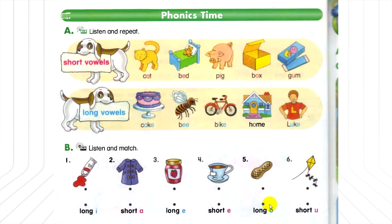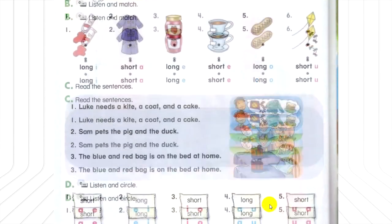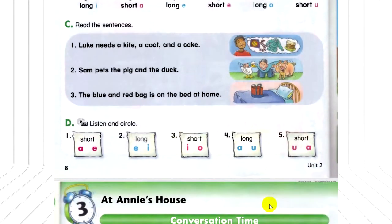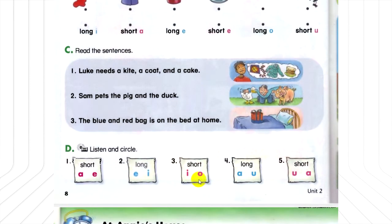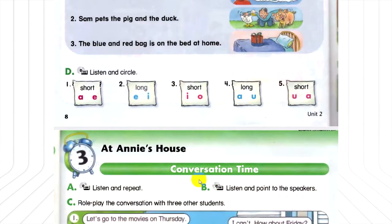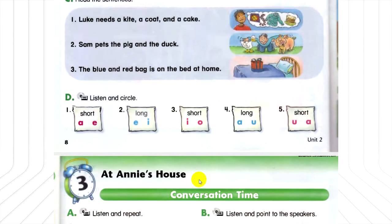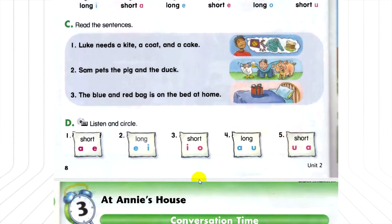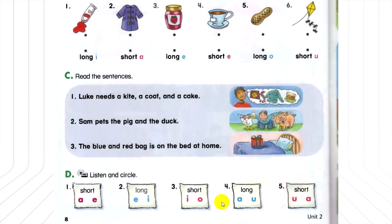D. Listen and circle. Number 1: pet, pet. Number 2: time, time. Number 3: hot, hot. Number 4: wait, wait. Number 5: bus, bus.